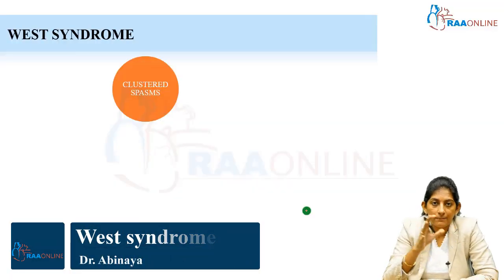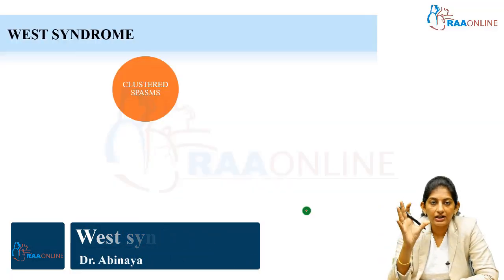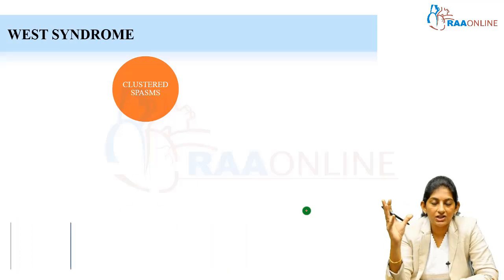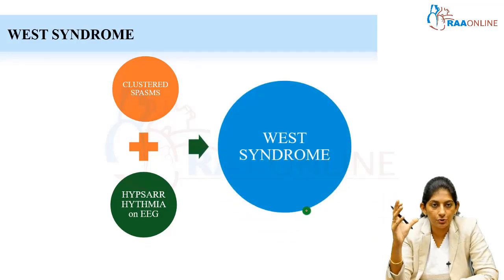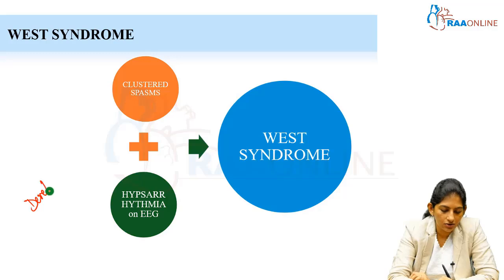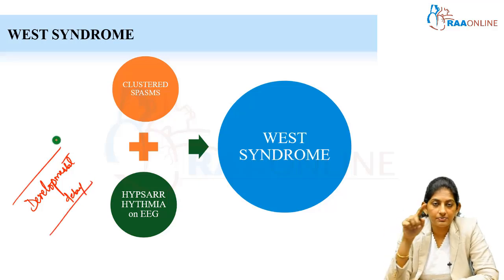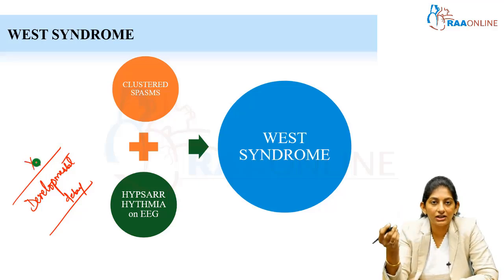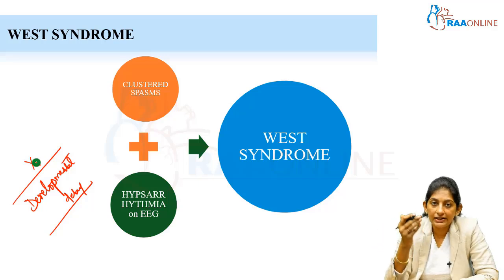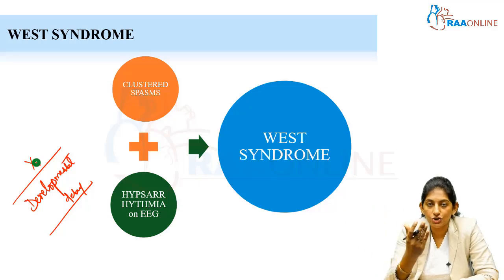What is West syndrome? West syndrome occurs when there are spasms occurring in clusters plus hypsarrhythmia on EEG. Previously, developmental delay was also part of the diagnosis as a triad: spasms, hypsarrhythmia, and developmental delay. But now developmental delay has been taken off because there are cryptogenic or idiopathic causes which occur in a developmentally normal child. So spasms occurring in clusters with EEG showing hypsarrhythmia gives the diagnosis of West syndrome.